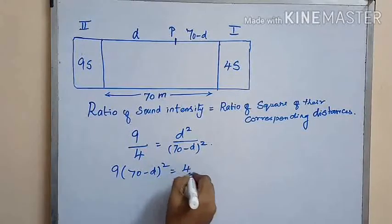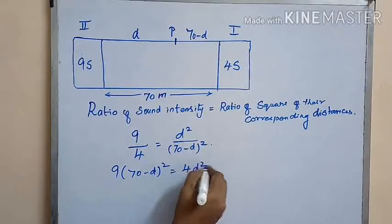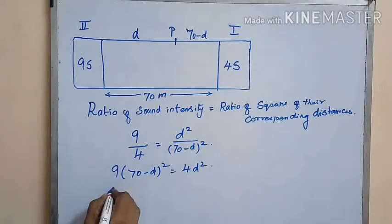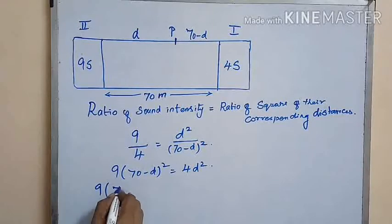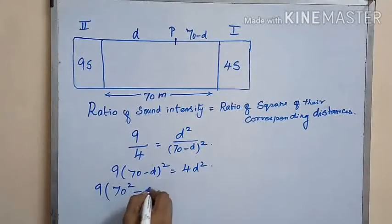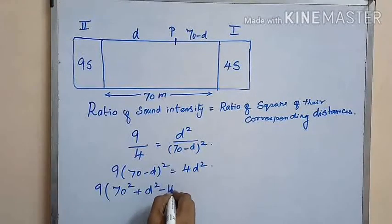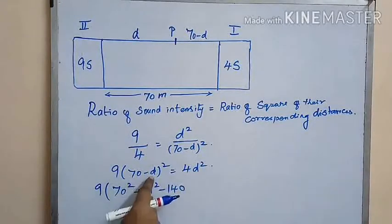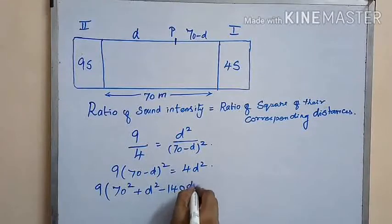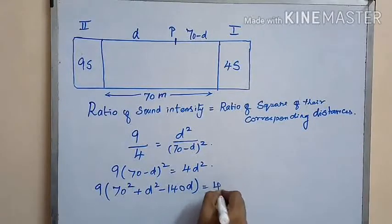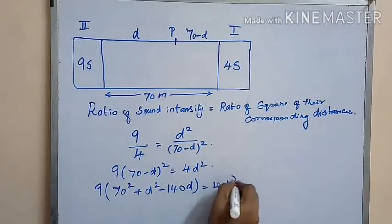Now cross multiplying, we get 9 into (70 minus d) whole squared is equal to 4d squared. So 9 into (70 squared minus 140d plus d squared) is equal to 4d squared.